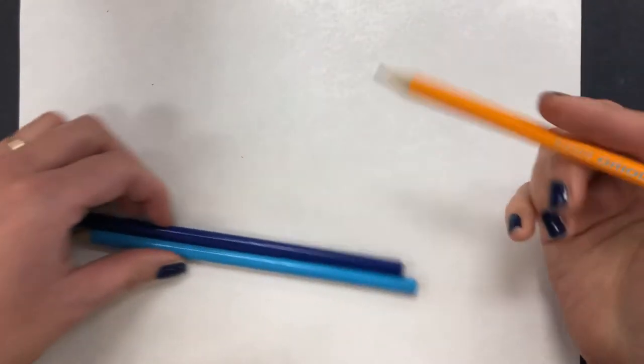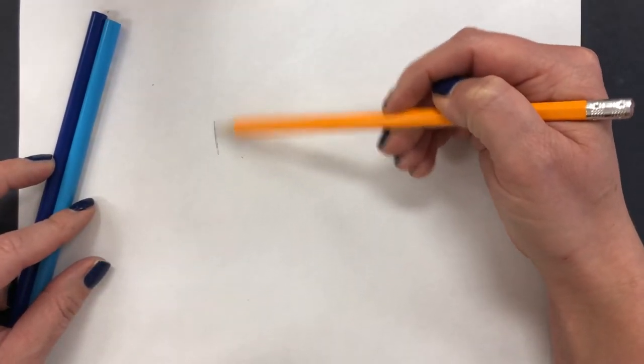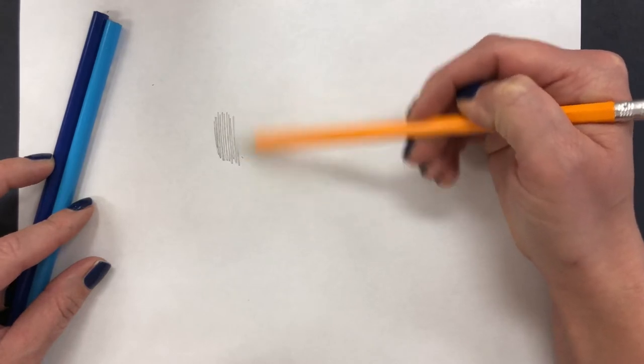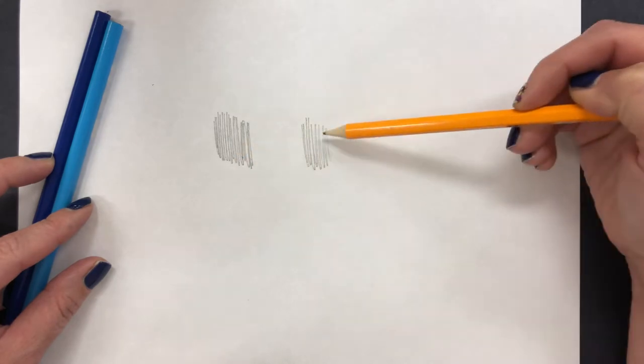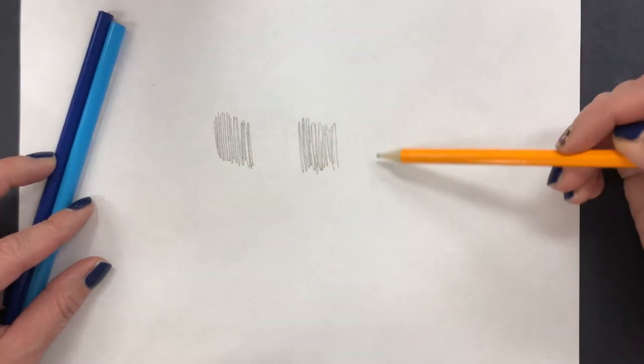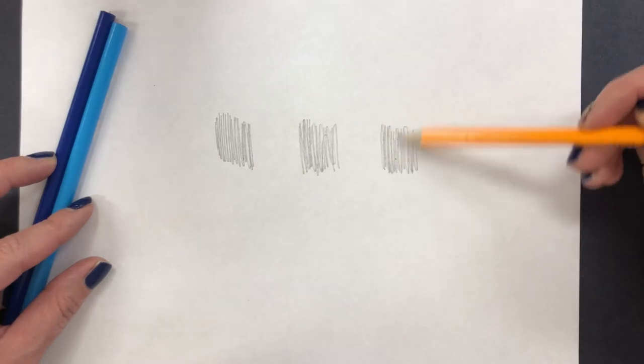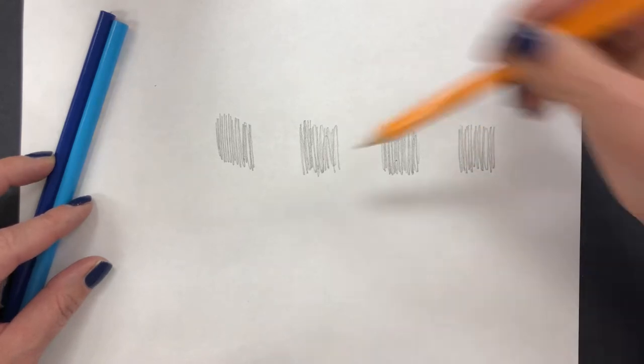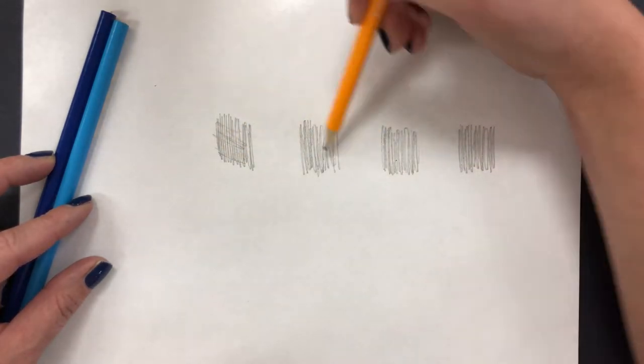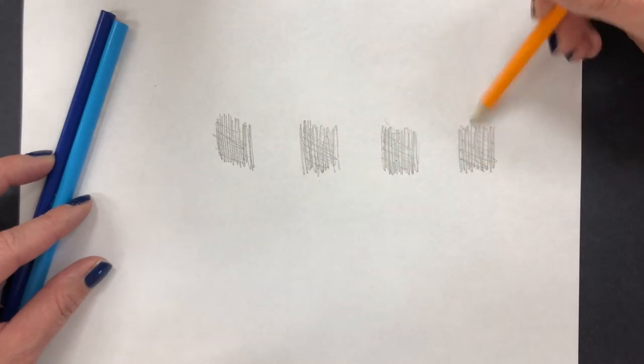I'm going to start off by making some marks on my paper to practice blending. So go ahead on your paper and we're going to do one for finger, tissue, cotton swab or q-tip, and I'm going to add a fourth one for my blending stump. I'm going to come back over and just do some light scratchy marks over the top of those.